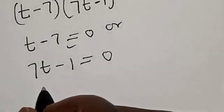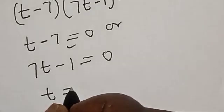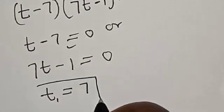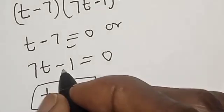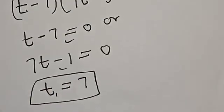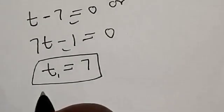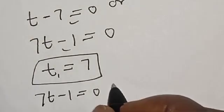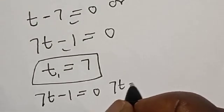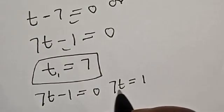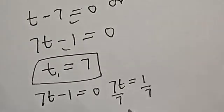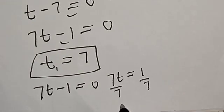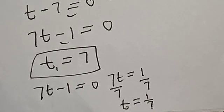From the first case, t is equal to 7. Let's call this t1. Also, from the second case, 7t minus 1 is equal to 0, so 7t is equal to 1. Dividing both sides by 7, our t is equal to 1 over 7. That is our t2.